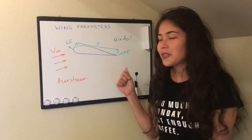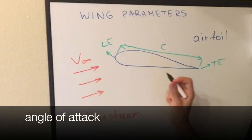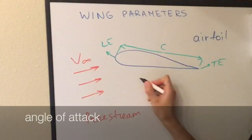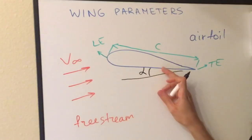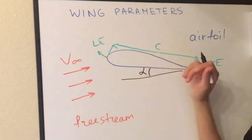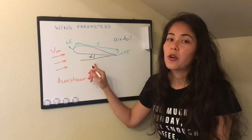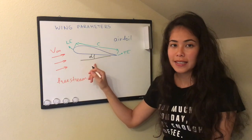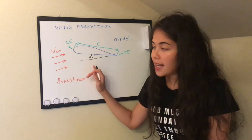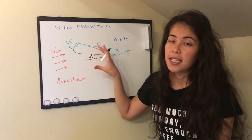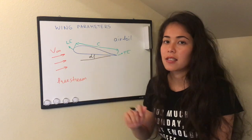The last parameter is the angle of attack, which is the angle between the free stream velocity and the profile of the wing, or the airfoil. Angle of attack is also an important parameter, which we'll see in a later video. Depending on the angle of attack, the aircraft can get more or less lift, or no lift at all — which means stalling.